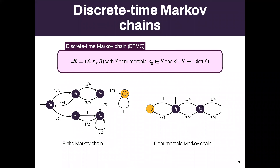You also have denumerable Markov chains where the state space is denumerable. For instance, a one-dimensional random walk — you can go left or right with some probability. Our aim: I will focus in many parts of this talk on reachability properties, which means computing the probability of reaching some target states.